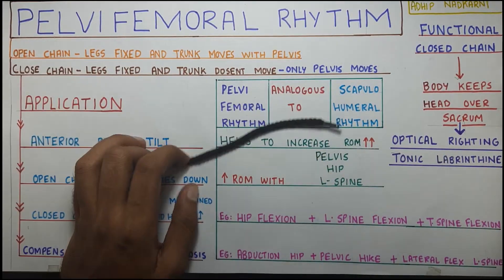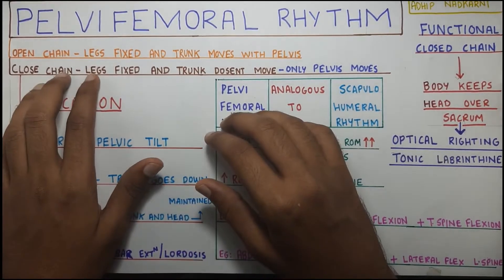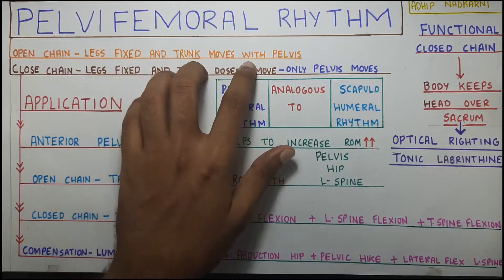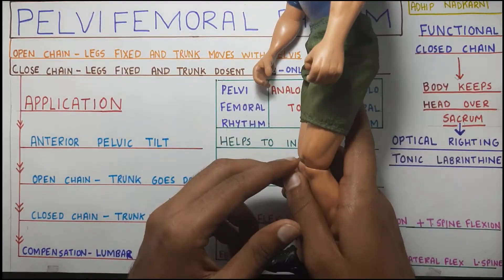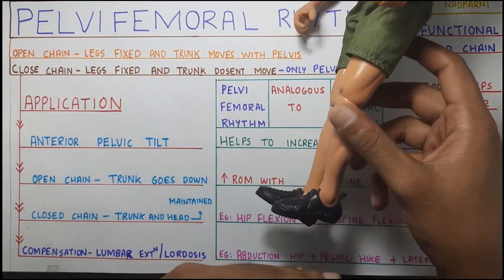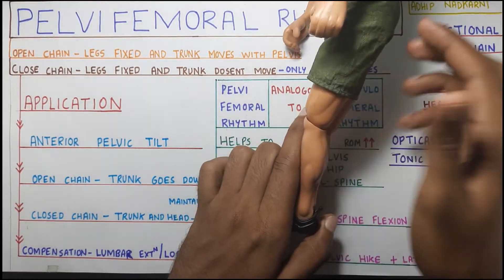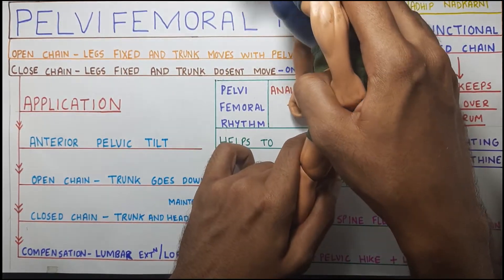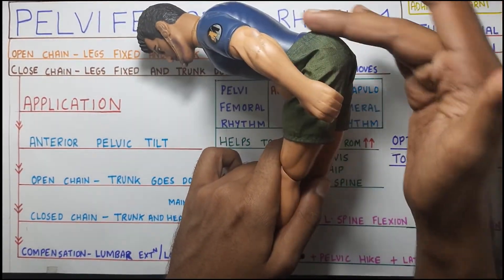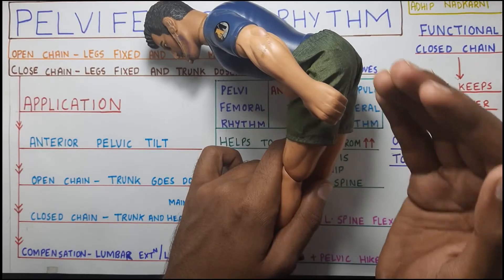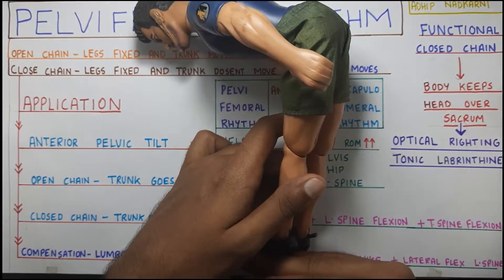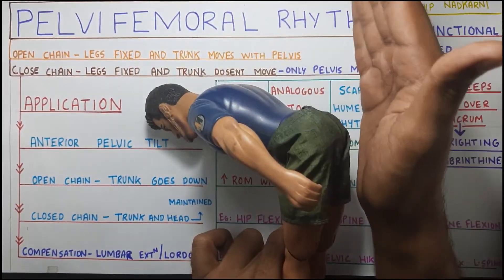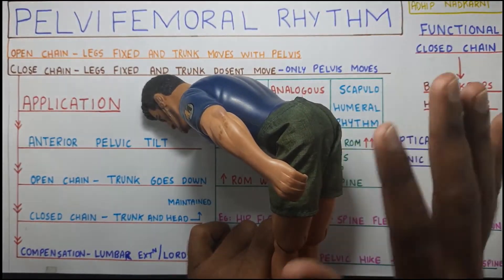In open chain for your pelvis, your legs will be fixed on the ground and the trunk will be moving with the pelvis. Taking the example of Joe - his legs are fixed on the ground, and if he is doing an anterior pelvic tilt, he will be bending forward, and with that his trunk and head will also move. This is open chain kinematics because his leg is fixed and the distal end is free to move.